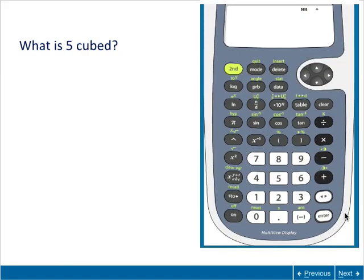The X squared button squares any number. For other powers, use the exponent button. First, enter the base number, then click the exponent button. Next, enter the exponent number, then click Enter. Click Clear when done.